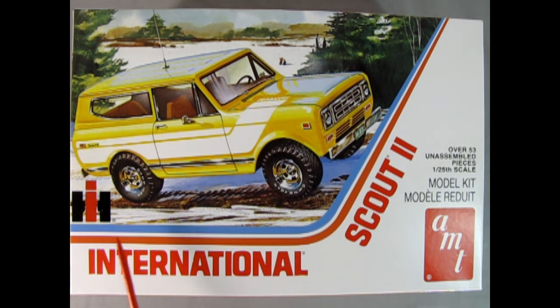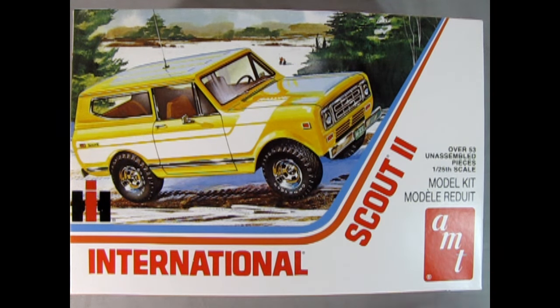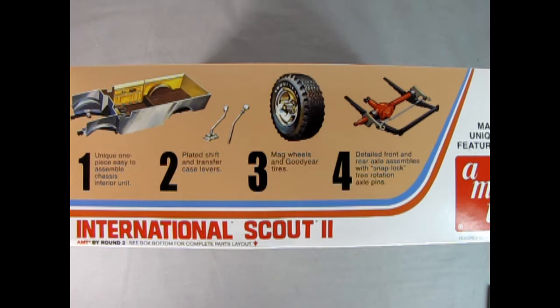International Harvester was a tractor company that branched out into building small utility vehicles from 1976 until 1980, well at least for the Scout 2. So check this thing out, this is really cool. Let's take a look at the side of the box and see what the features are. There's so many features on this model that we can't show you all of them at once, so we've got to break it down into multiple steps.